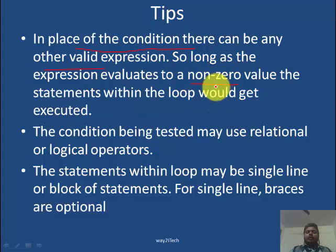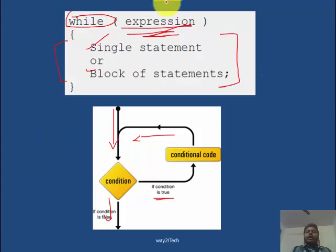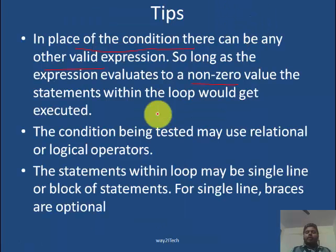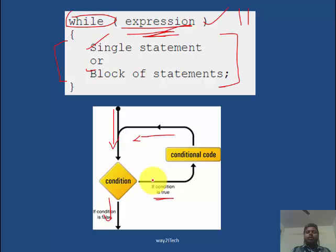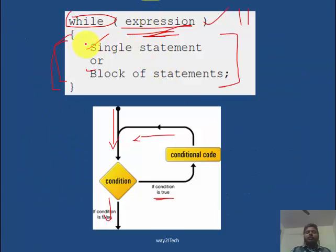Whenever the expression evaluates to zero, meaning false, we stop executing the block. The condition being tested may use relational or logical operators — any mathematical or logical operation like AND, OR, or any operation can be used. The statements within the loop can be a single statement or a block of statements; for a single line, braces are optional, same as with the if statement.